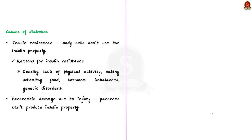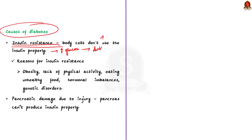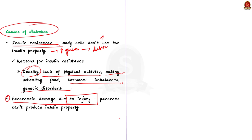Now let us see the causes of diabetes. The primary cause is insulin resistance — when cells in the body don't use insulin properly, glucose levels rise and this causes diabetes. Factors causing insulin resistance include obesity, lack of physical activity, eating unhealthy food, hormonal imbalance, and genetic disorders. The second major cause is pancreatic damage: if the pancreas is damaged due to any injury, it cannot produce insulin properly, leading to insufficient insulin to regulate blood glucose. These are the two major causes of diabetes.